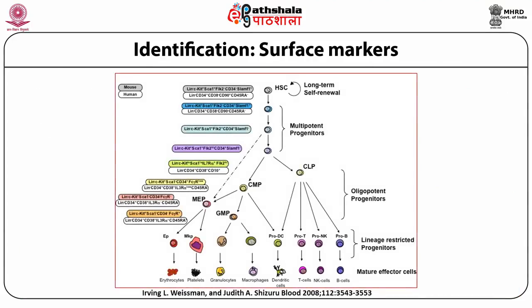Stem cells can be defined and identified on the basis of surface markers. These surface markers are specific receptor proteins present on different populations or subsets of stem cells and progenitor cells, allowing us to isolate them based on the presence or absence of different surface markers. These surface markers are also known as clusters of differentiation (CD). In this image, we can see that both mice and humans contain different subsets of surface markers specific to hematopoietic stem cells, multipotent progenitor cells, common lymphoid progenitor cells, common myeloid progenitor cells, and lineage-restricted progenitor cells.